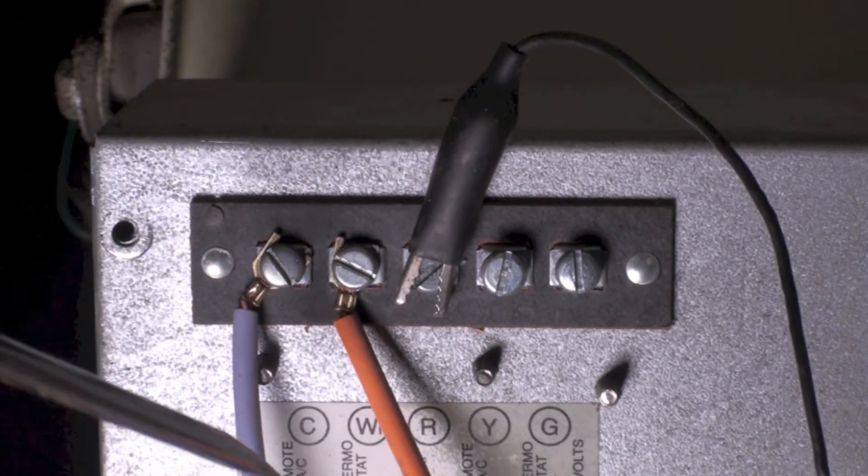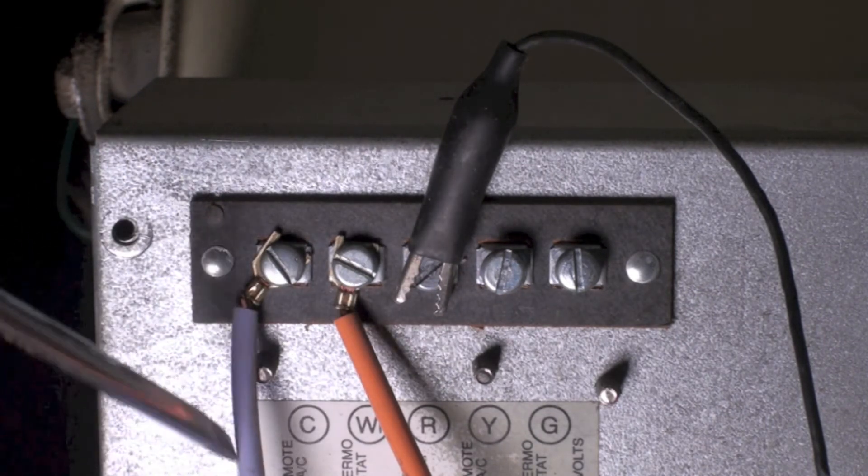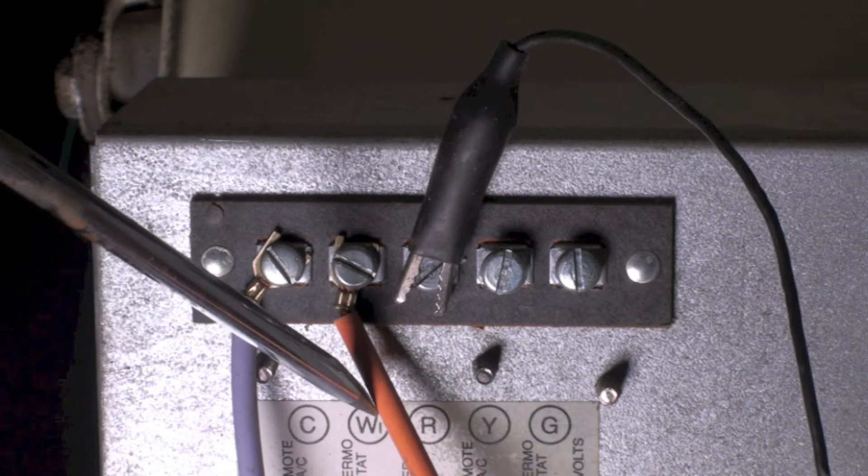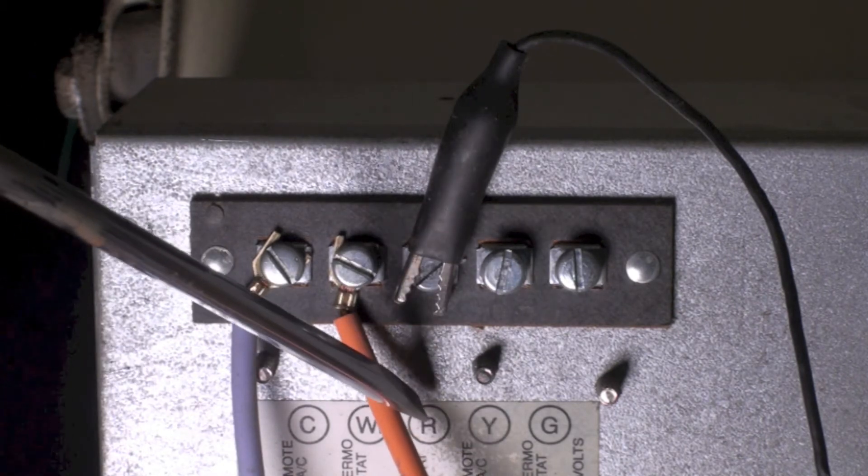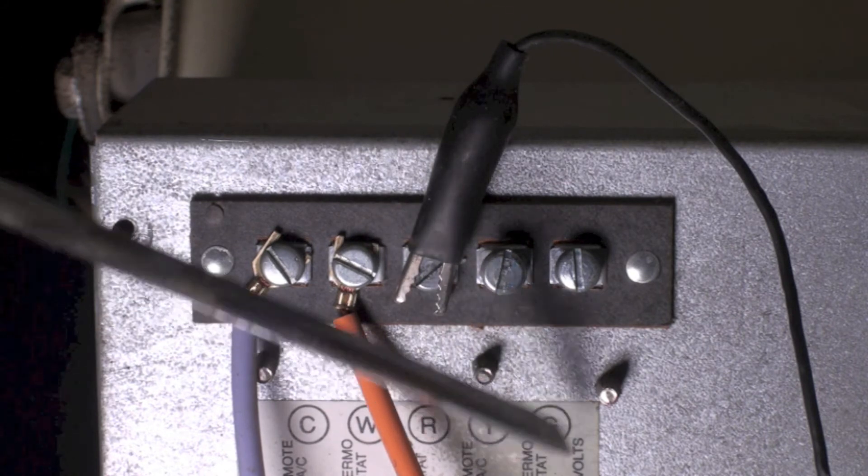You can see we have C, which is common from the transformer - this is all 24 volts down here. Next one over is W, which is the heat; R, which is the other side of the transformer, the switch side; and Y and G.